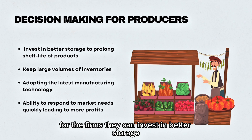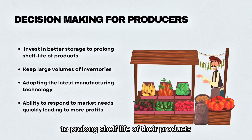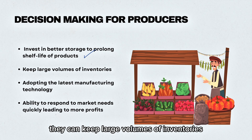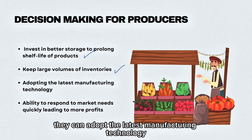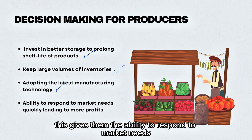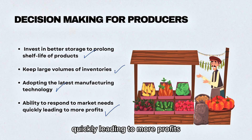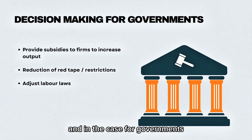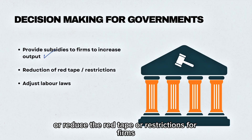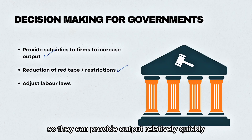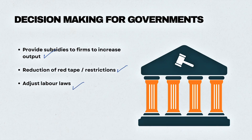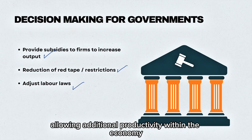For firms, they can invest in better storage to prolong the shelf life of their products, keep large volumes of inventories, and adopt the latest manufacturing technology. By doing this, they gain the ability to respond to market needs quickly, leading to more profits. For governments, they can provide subsidies to firms to increase their output, reduce red tape or restrictions so firms can provide output relatively quickly, or adjust labour laws to allow additional productivity within the economy.